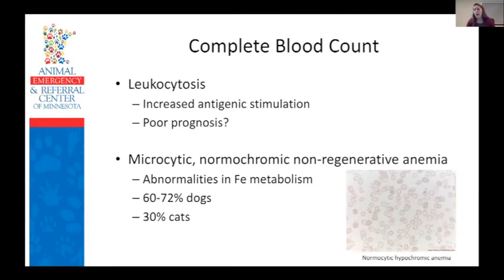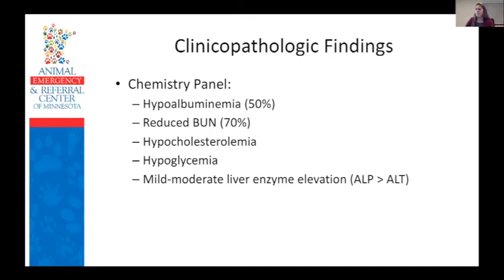Anemia is suspected to be due to abnormalities in iron metabolism, but the exact pathogenesis has not been described. Microcytosis has been reported with or without associated normochromic non-regenerative anemia in 60 to 72% of dogs and 30% of cats. Abnormalities in markers of liver function are very commonly identified. They typically result from decreased hepatic synthesis and include hypoalbuminemia, reduced BUN, hypocholesterolemia, and hypoglycemia. In cats, hypoalbuminemia is uncommon and low BUN concentrations are more frequently identified.